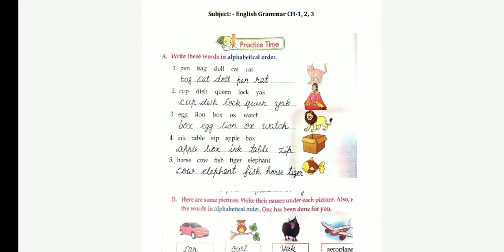Next one, egg, lion, box, ox and watch. Which word will come first? Box. Next word, egg. Then, lion, ox and watch. Fourth one, ink, table, sip, apple, box.